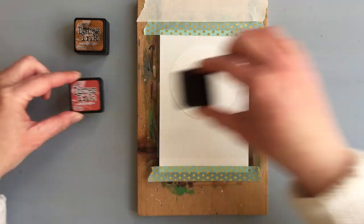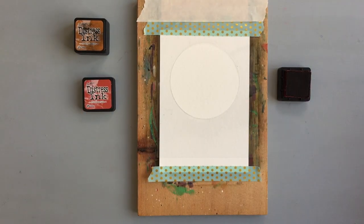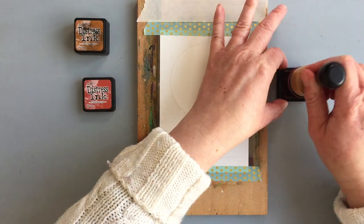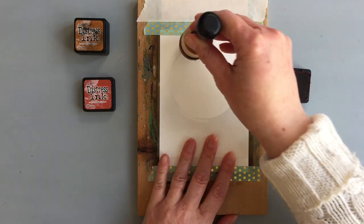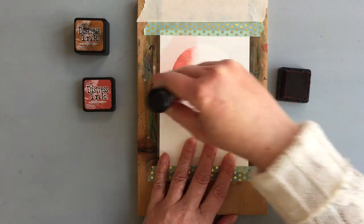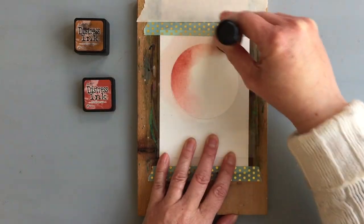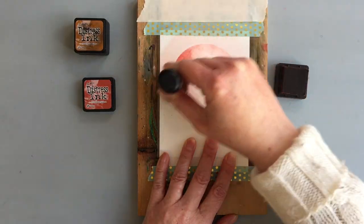The cardstock I used on both is the Canson Excel watercolor cardstock. For this moon I decided to make the colors more fun and used orange and red inks—the rusty hinge and fired brick.